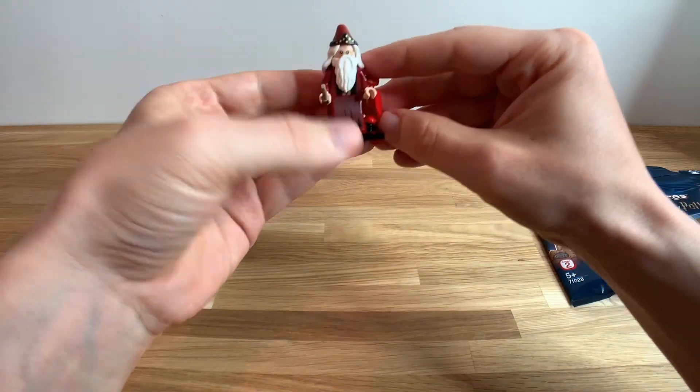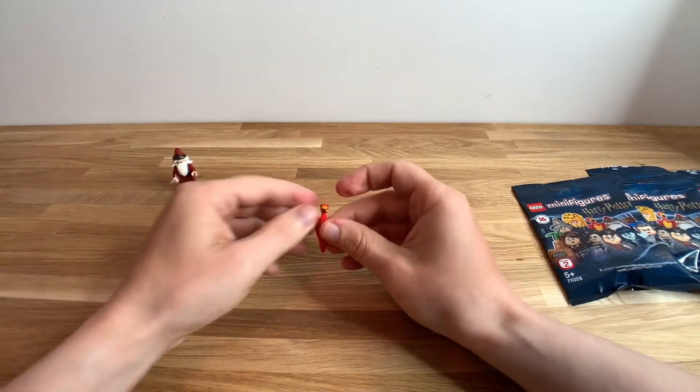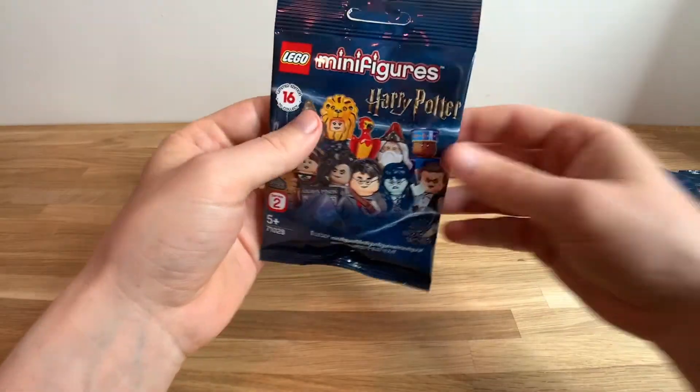He also comes with a Fawkes the Phoenix that I have no idea how it stands. Let's move on to the second bag.